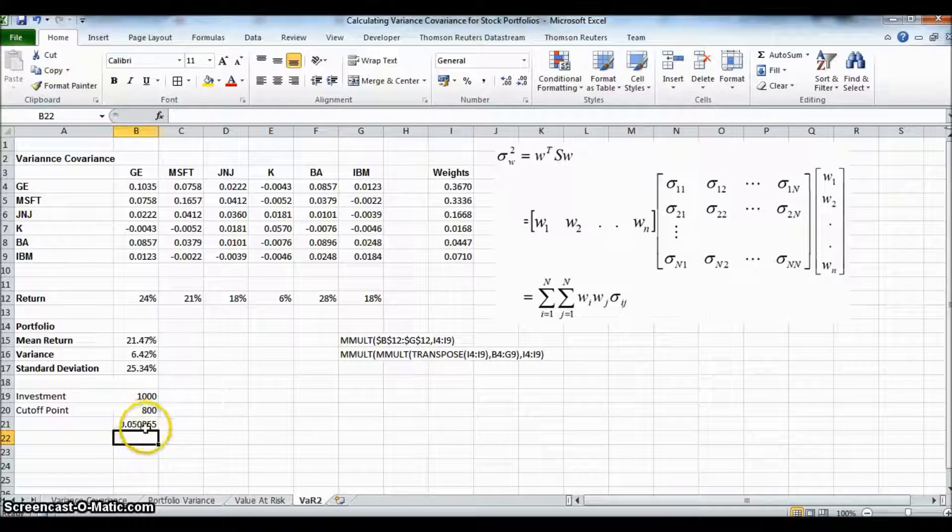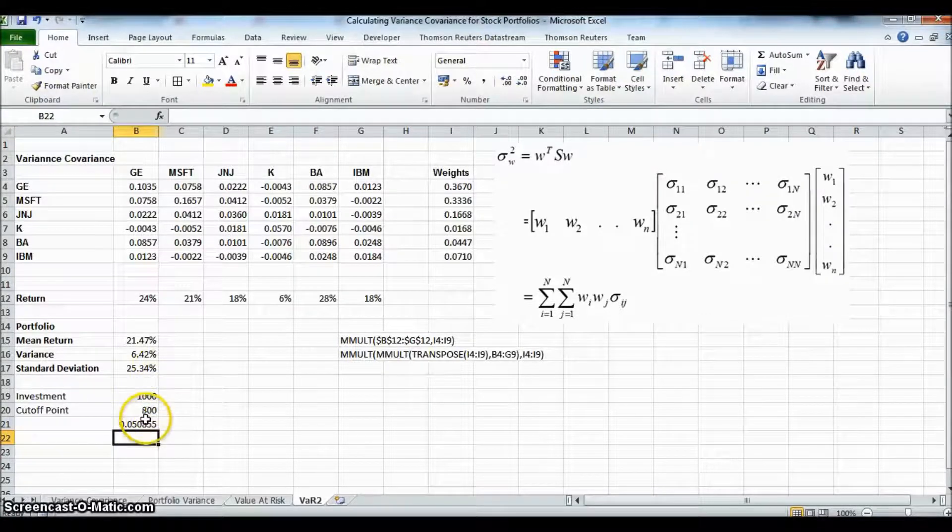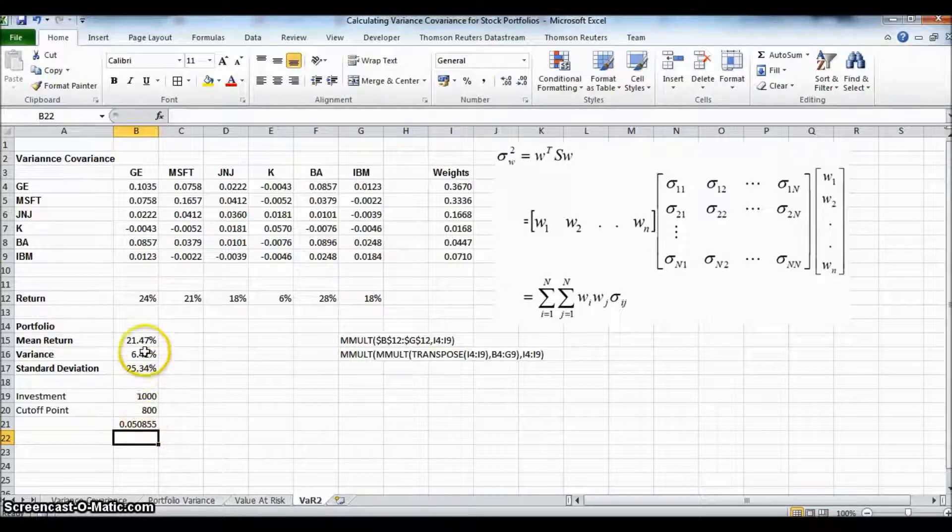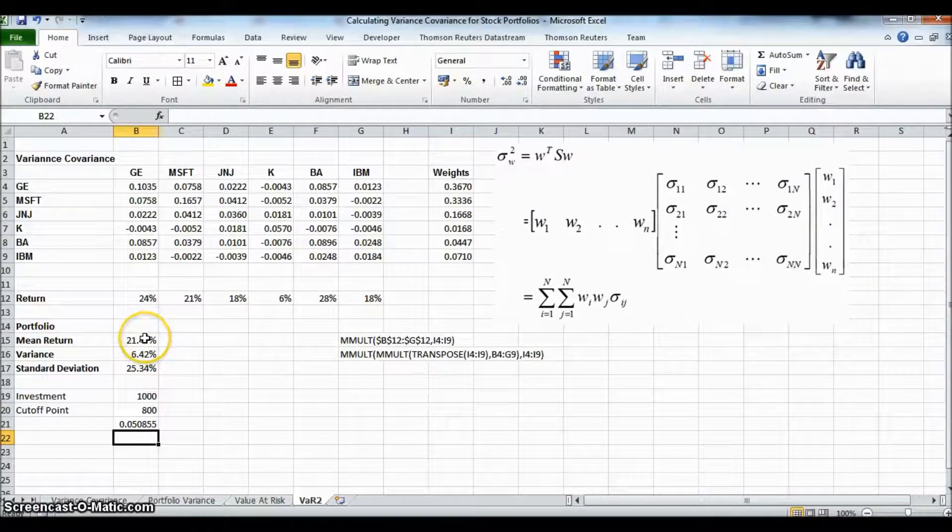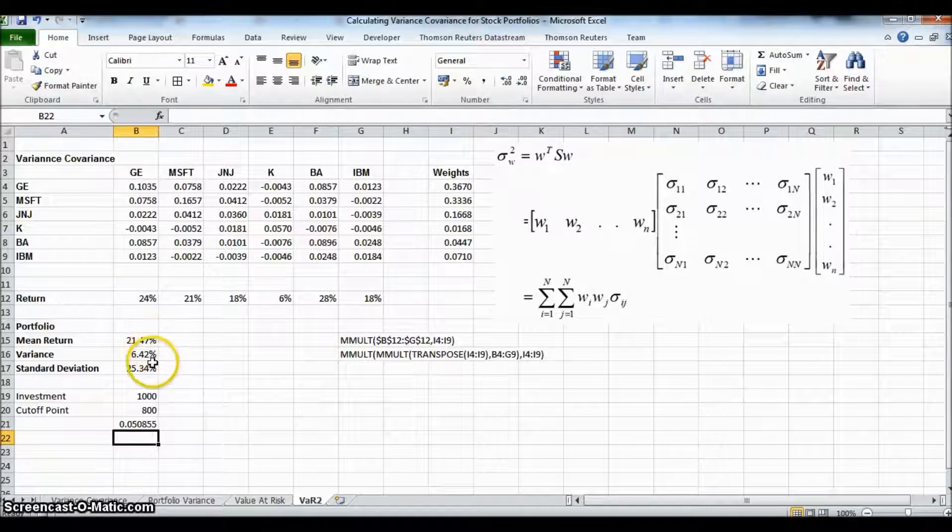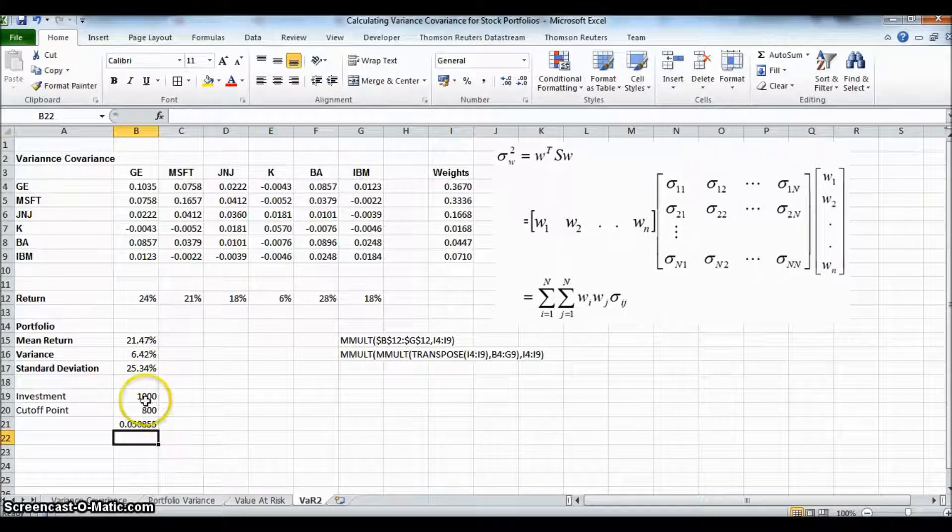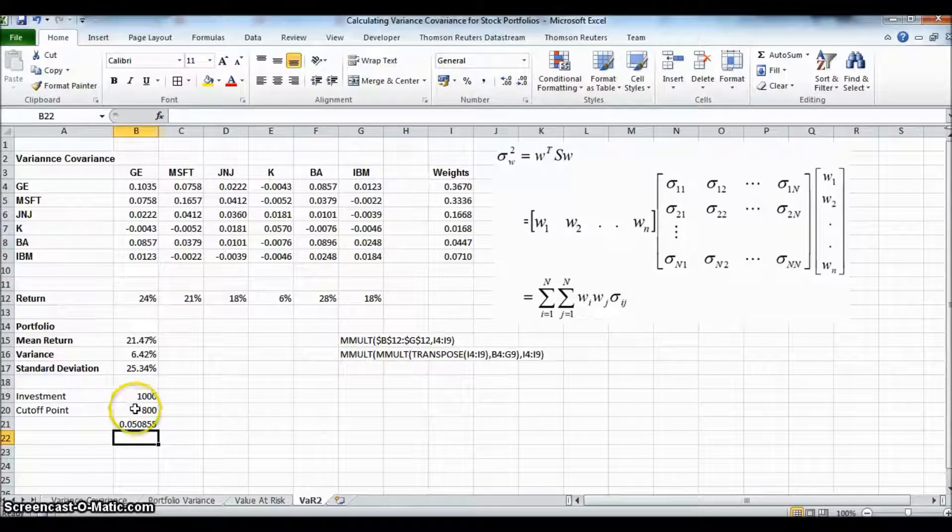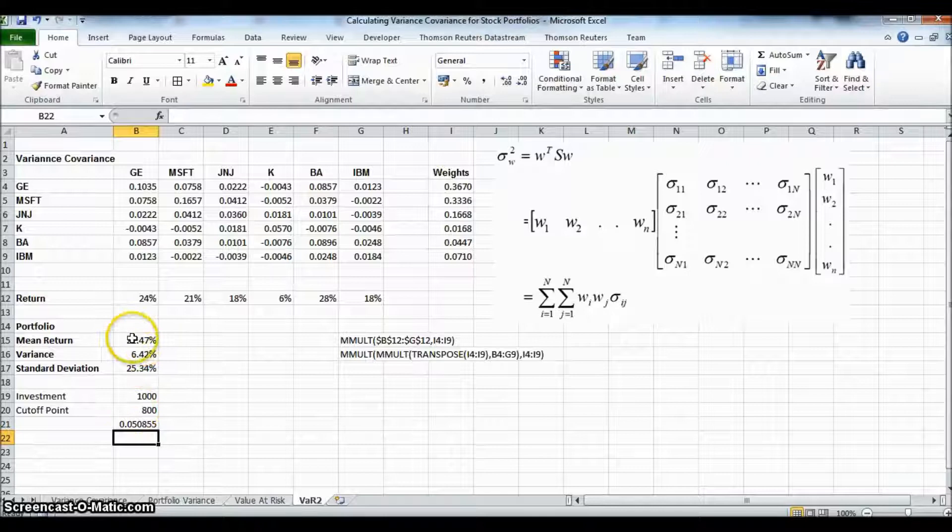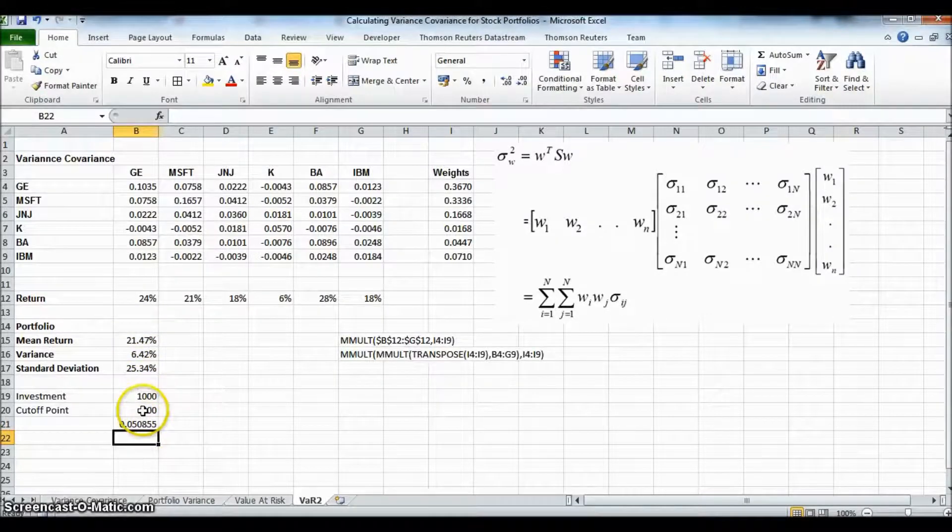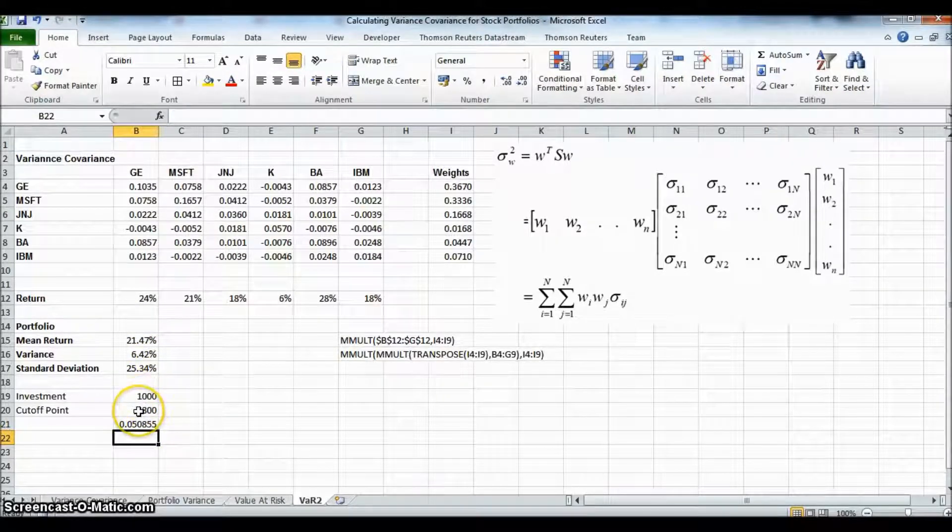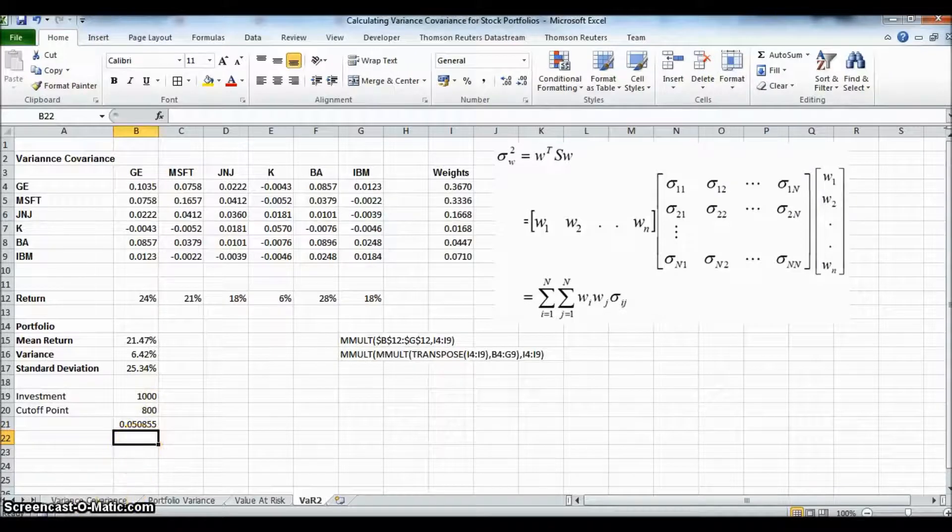And what we can infer from this is that the probability, given that the mean return is 21%, the variance, the standard deviation is 25%. The probability, if we started with a thousand dollars investment, the probability after a period of one year of this investment being less than 800 is 5%.